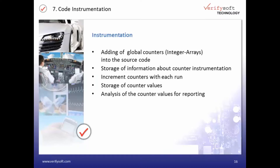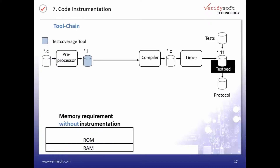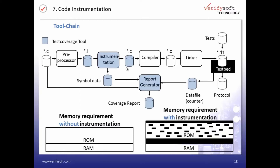Now let's look at how it works. Testwell CTC++ does an instrumentation of the code which needs to be tested. It adds counters to the source code, stores information about them, increments the counters with each execution, and gives you the analysis of the counter values at the end or on demand. The instrumentation is done between preprocessor and compiler, and we get the coverage report at the end of the process.